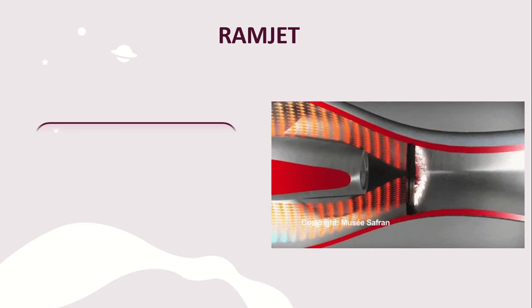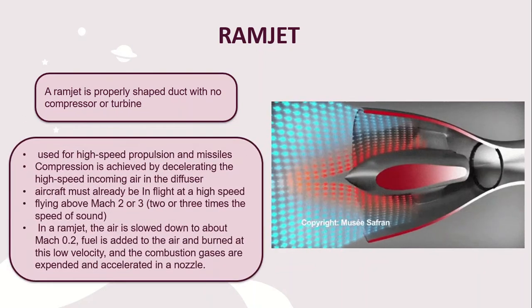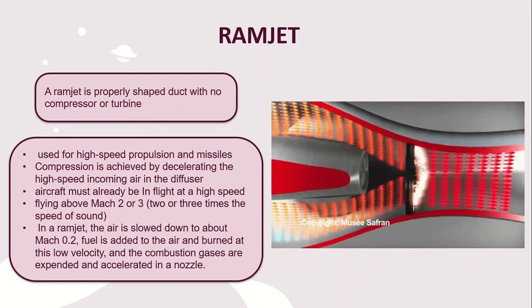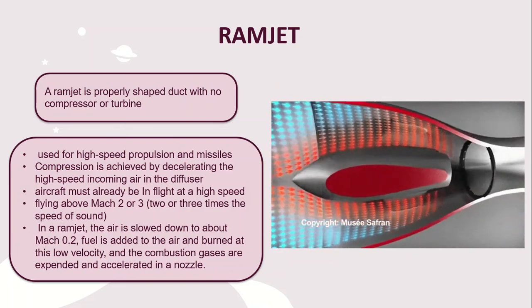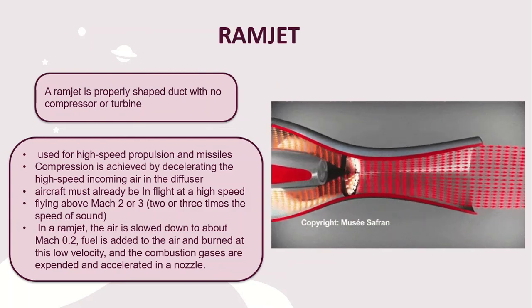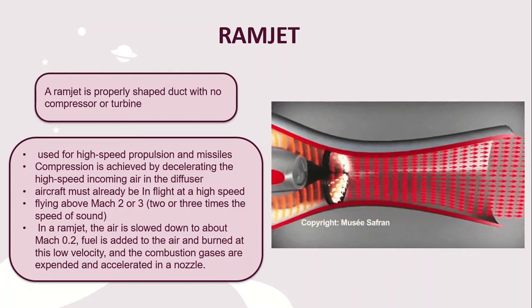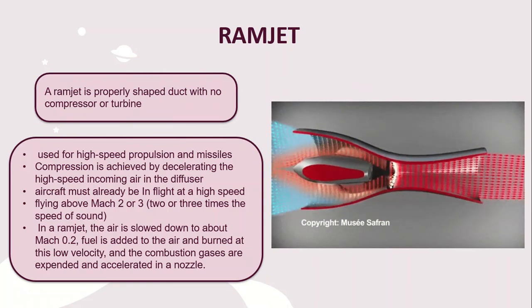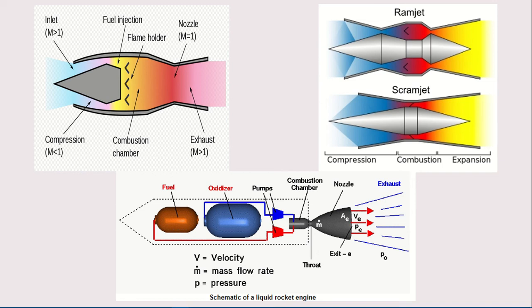The ramjet is a properly shaped duct with no compressor or turbine. It is used for high-speed propulsion and missiles. Compression is achieved by decelerating the high-speed incoming air in the diffuser; the aircraft must already be in flight at high speed — flying above Mach 2 or 3. The air is slowed down to about Mach 0.2, fuel is added and burned at this low velocity, and the combustion gases are expanded and accelerated in a nozzle. The ramjet differs from the scramjet in design, and there is also the liquid rocket engine.